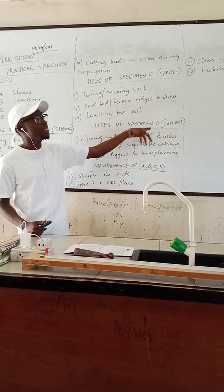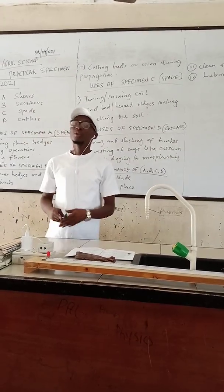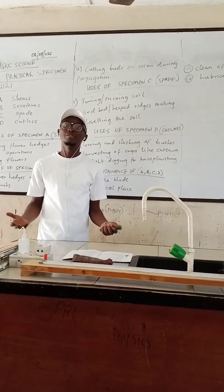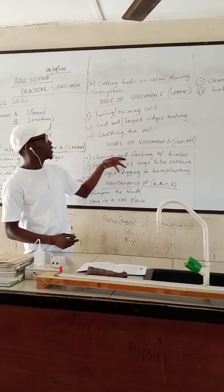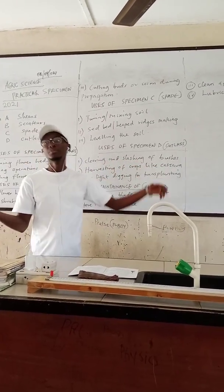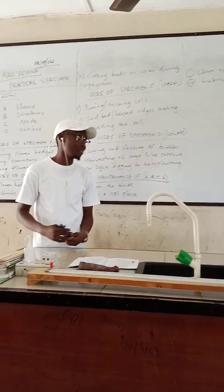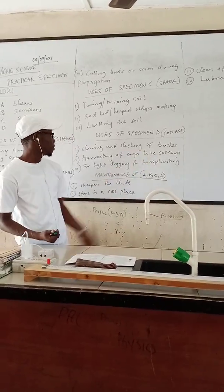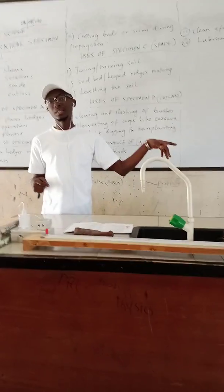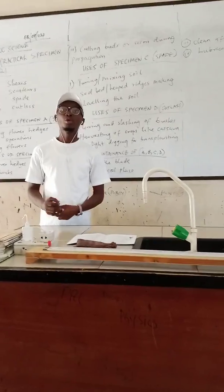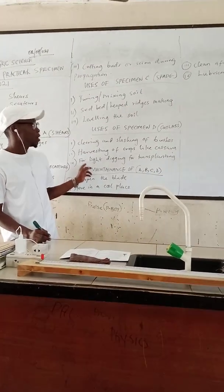Specimen D is the cutlass, which we know well and use in our various homes. It is used for clearing and slashing bushes. It is also used for harvesting crops like cassava or yam. It is also used for slight digging when transplanting — when you want to conduct transplanting, you can use the cutlass.